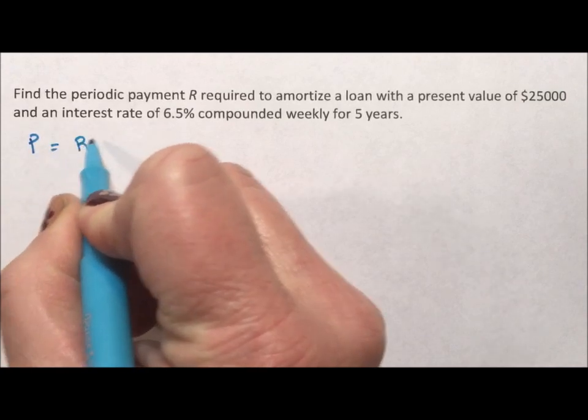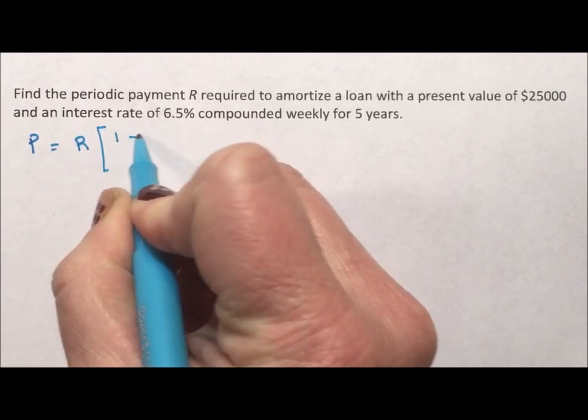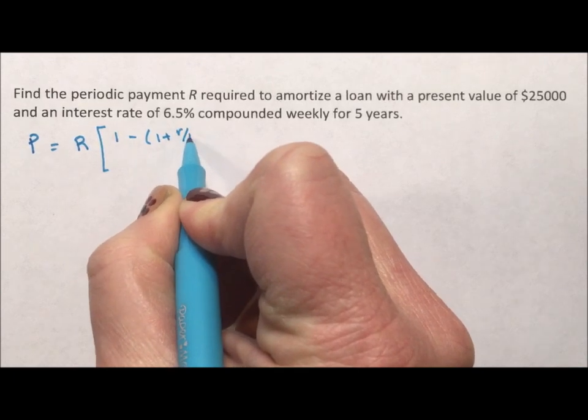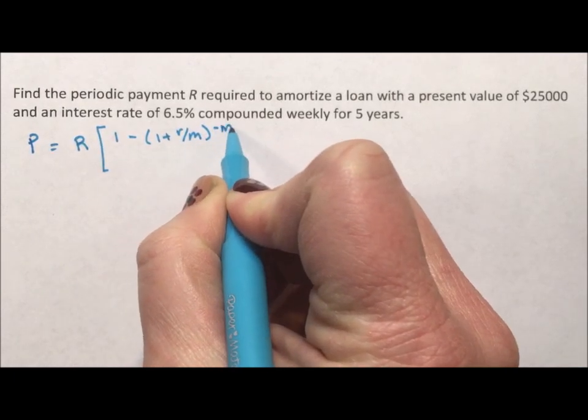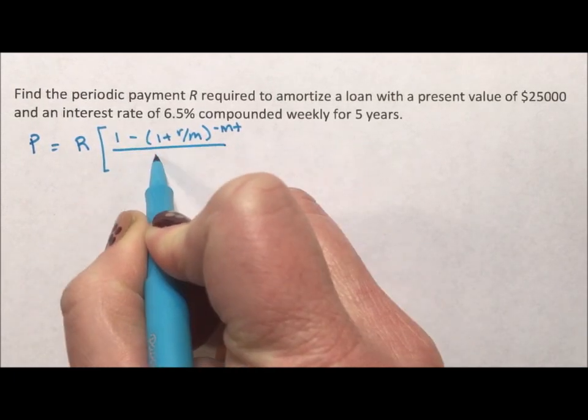Here's our equation. P equals R times [1 minus (1 plus R over M) to the negative MT] divided by R over M.